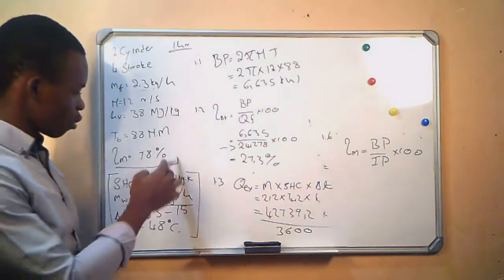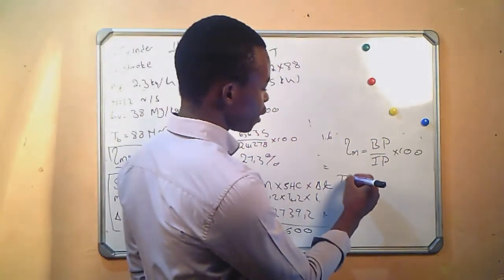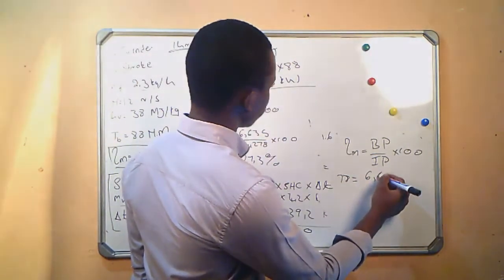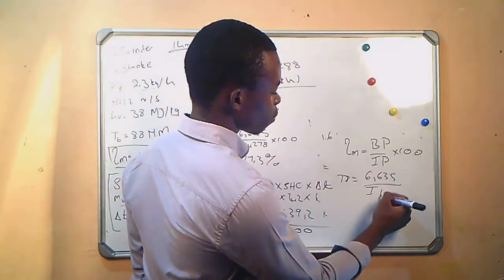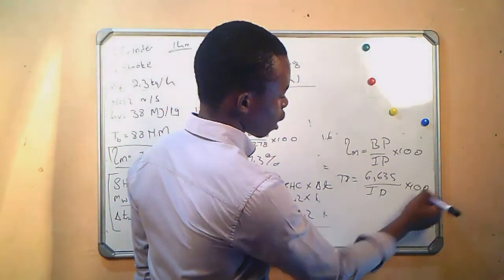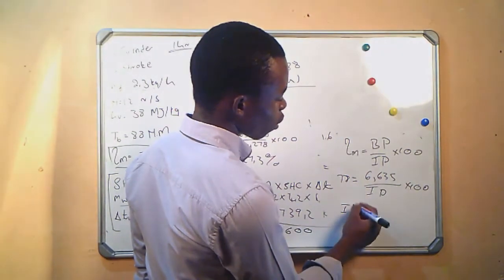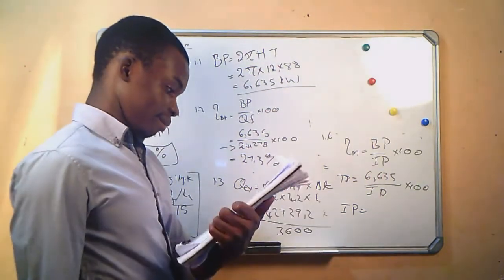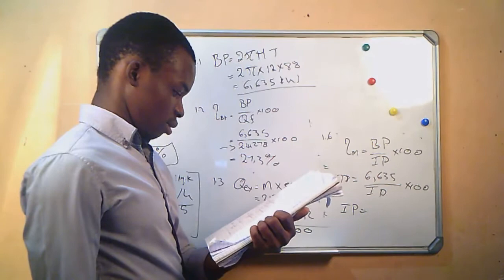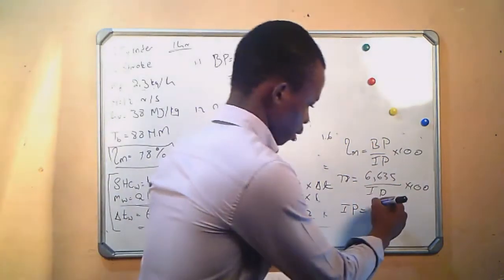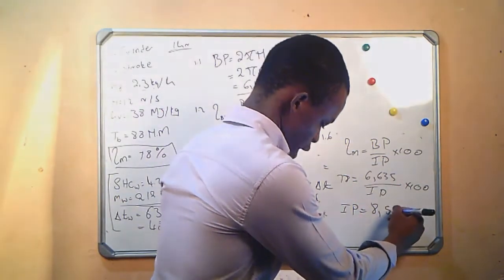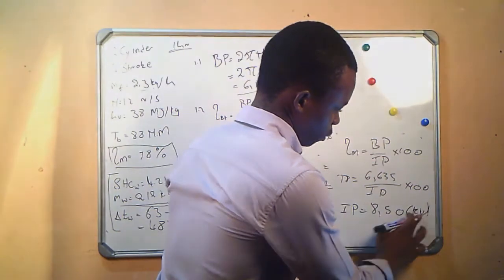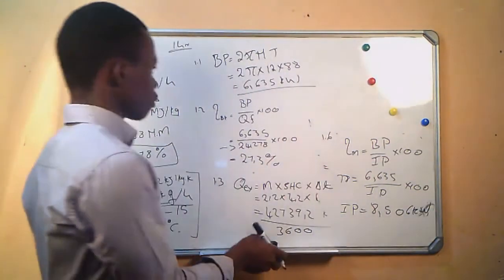We are given mechanical efficiency of 78%. So: 78 = (6.635 / indicated power) × 100. Solving this gives indicated power = 8.506 kilowatts.